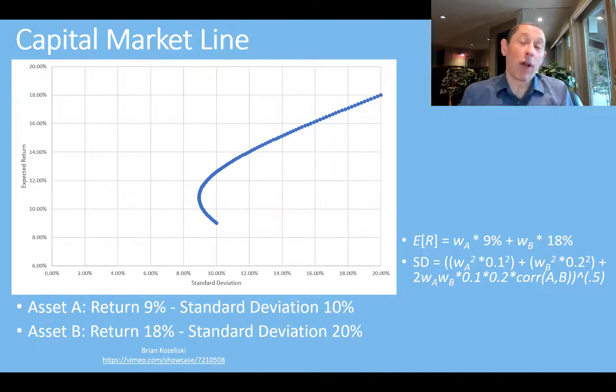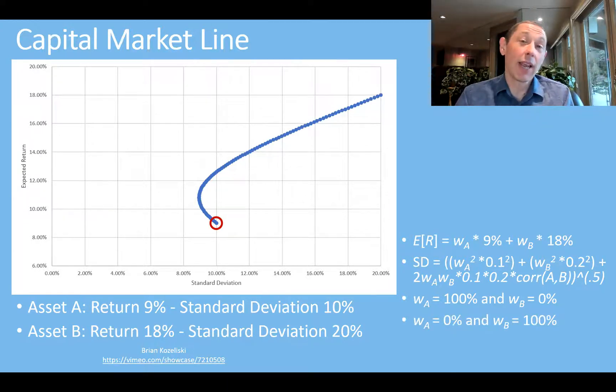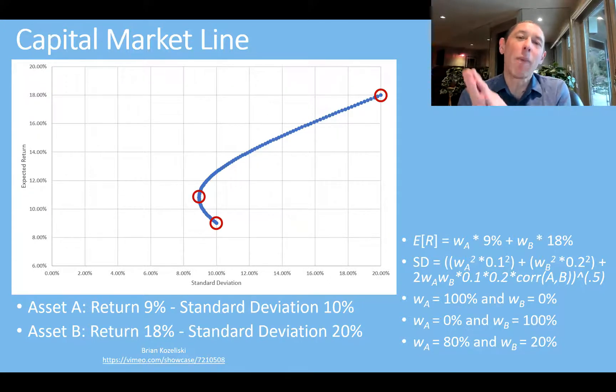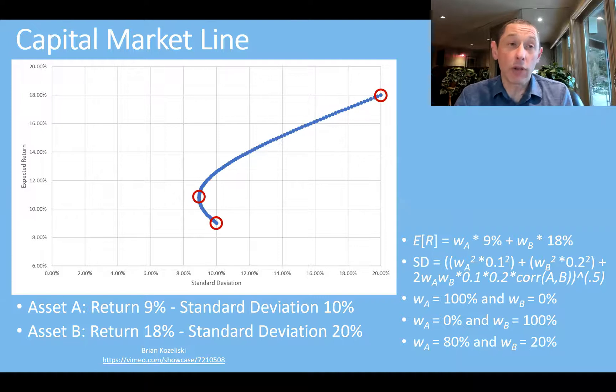Now, if we take every possible combination of assets out there, we actually get this, where we have expected returns and standard deviation. We have this nice little curve. It's called the efficient frontier. Now, if we were to take 100% in asset A, that's going to be this portfolio right here with 9% return, 10% standard deviation. If we go 100% in asset B, we're going to be way over here with 18% return and a 20% standard deviation. Now, if we go 80 and 20, we're going to get this portfolio here, which is actually the minimum variance portfolio. It's the one that has the lowest standard deviation. All of those portfolios below it are not efficient because you can get better return and lower the risk at the same time.